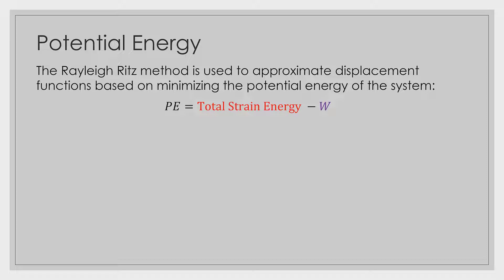If we look at these two components: the total strain energy, which we covered in assignment number eight — you guys should be very familiar with total strain energy for linear elastic isotropic systems. And the work done on a system, we covered in the last assignment when we talked about virtual work. So by this point, you guys should be experts in calculating those two terms. But in case you forget, let's go over them.